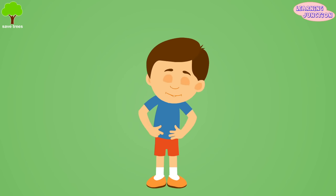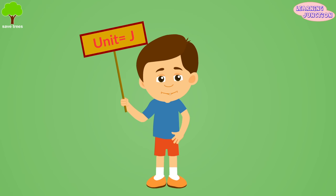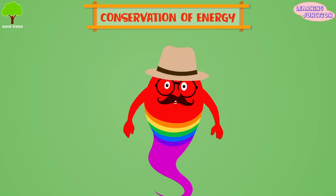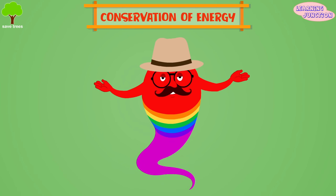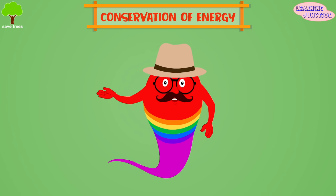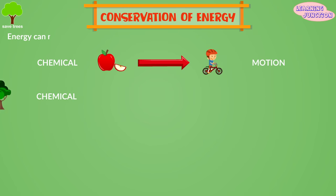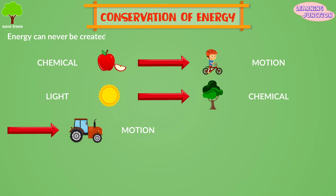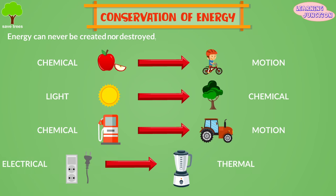The standard unit of measure for energy is the joule, which is abbreviated as J. It's time to learn the law of conservation of energy. It states that energy can never be created nor destroyed, but it can be transformed from one type to another.